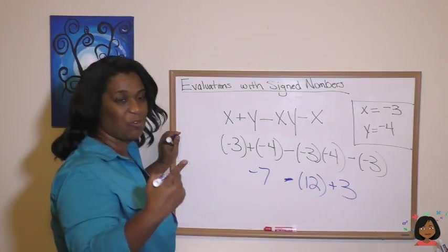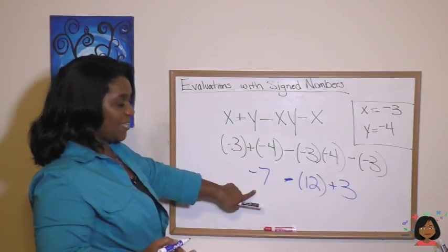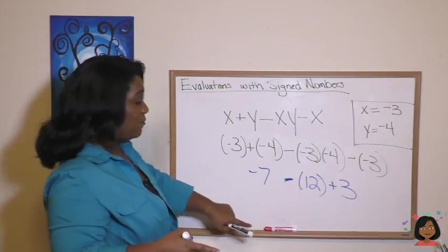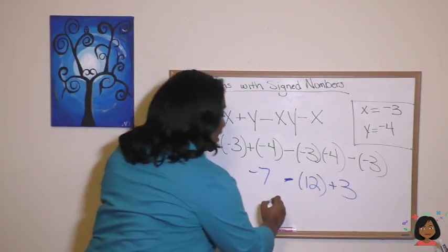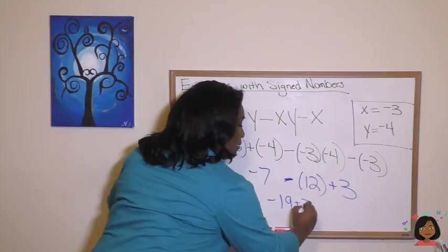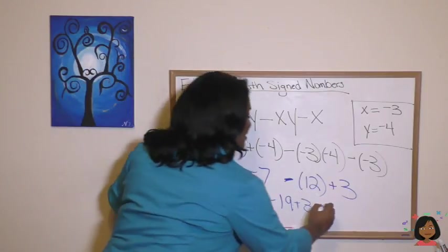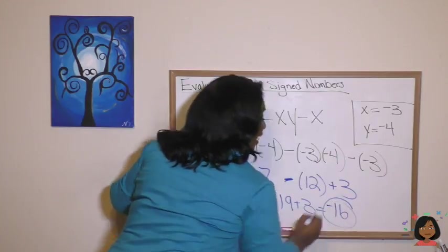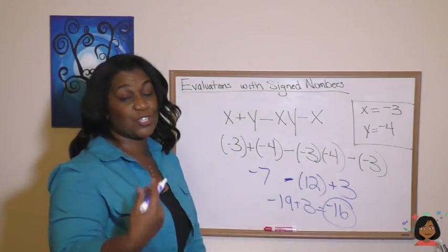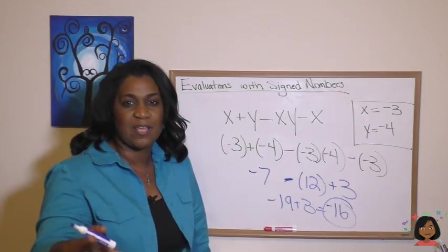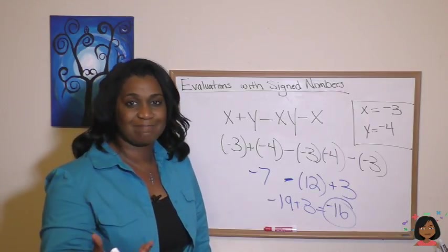Let's do one more round. Negative seven minus 12, we're going to get more negatives. That's a negative 19 plus three. The negative 19 plus three is a negative 16. And that is your answer. So the trick here is we just use parentheses to kind of keep everything separate until we were ready to work with it.